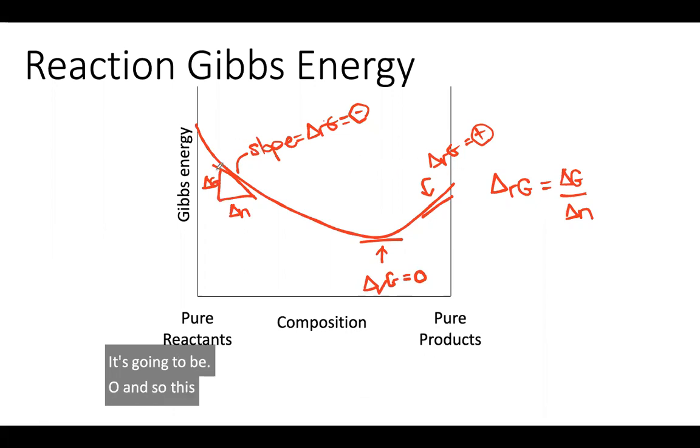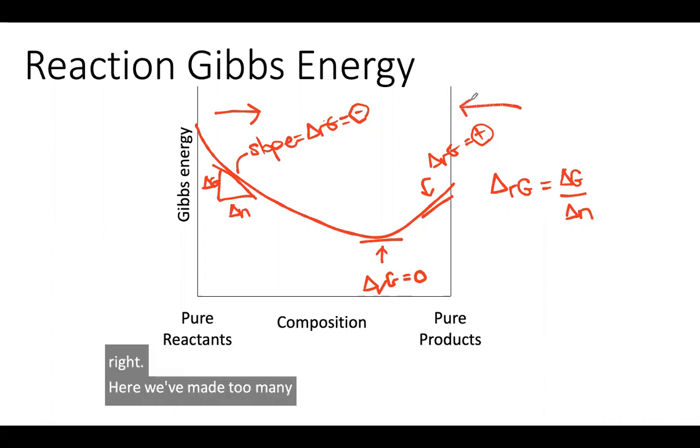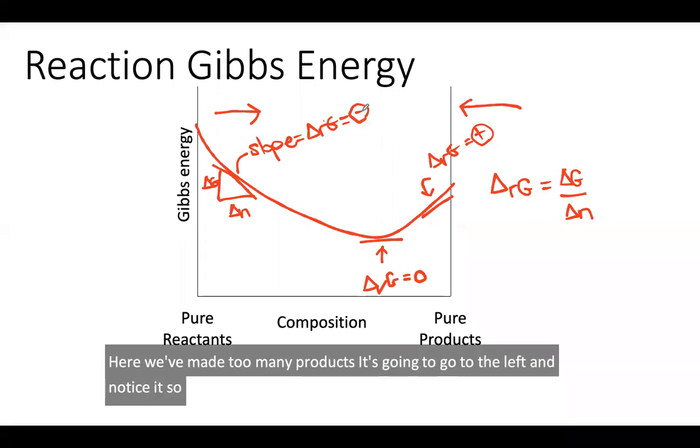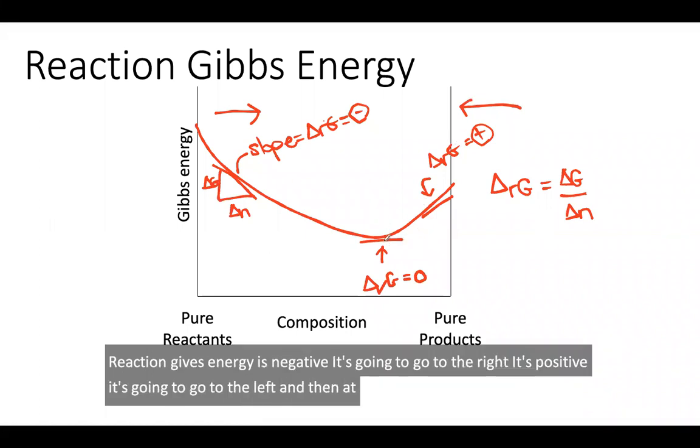And so this is telling us that here we haven't made enough products, and so the reaction is going to spontaneously progress towards the right. Here we've made too many products, it's going to go to the left. And notice, our reaction Gibbs energy is negative, it's going to go to the right; it's positive, it's going to go to the left. And then at the minimum, at equilibrium, it's going to equal zero.